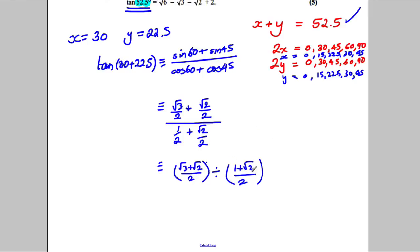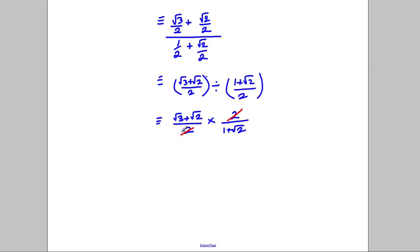When dividing fractions, you could flip the second fraction and multiply, so this would be root 3 plus root 2 over 2 multiplied by 2 over 1 plus root 2. The factor of 2 on the numerator and denominator can be divided out, so I would get myself root 3 plus root 2 over 1 plus root 2.